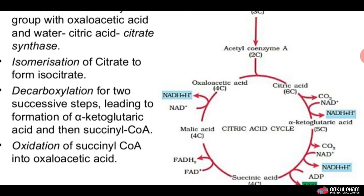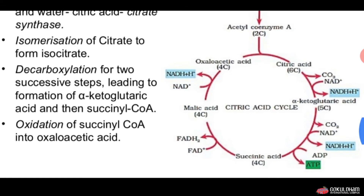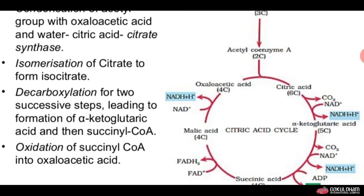During this cycle, NADH and ATP and GTP are produced. These will enter into oxidative phosphorylation for the formation of ATP and enter into the electron transport system, which we will see later.